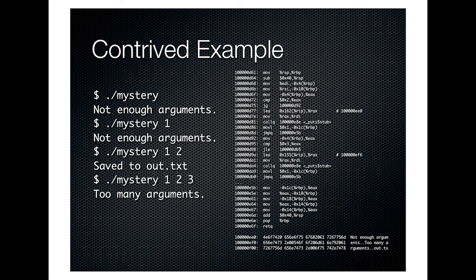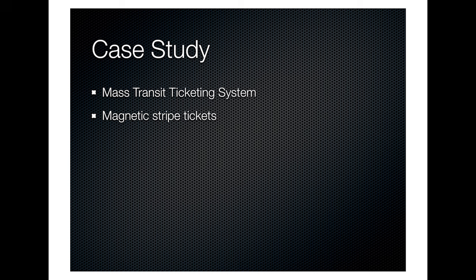In this case, we're going to be looking at magnetic stripe tickets from a mass transit ticketing system — trains, buses, trams. These are magnetic stripe tickets, so they have a string of data encoded on them. We used a magnetic stripe reader to read that data off, and we wanted to figure out what that magnetic stripe data meant, its significance.